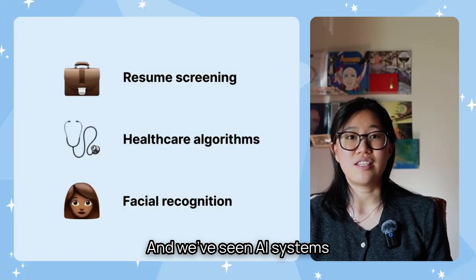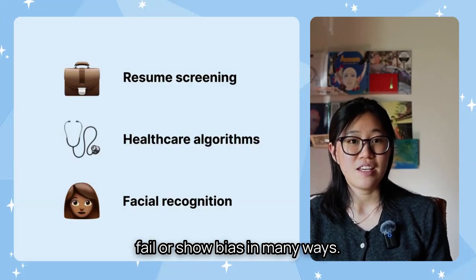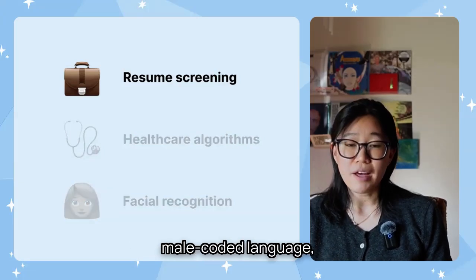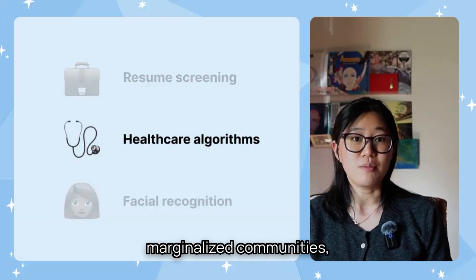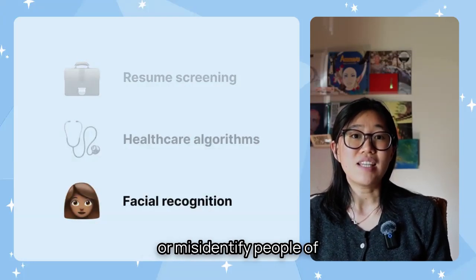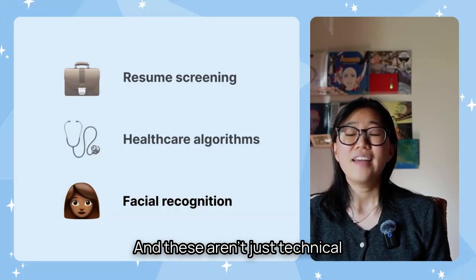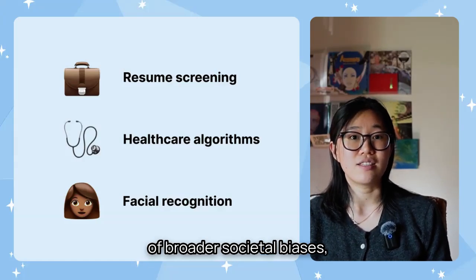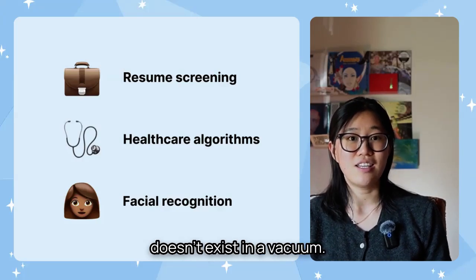We've seen AI systems fail or show bias in many ways. AI can prefer resumes with male-coded language, undervalue patients from marginalized communities, or misidentify people of color in facial recognition. And these aren't just technical glitches — they're reflections of broader societal biases. They remind us that AI doesn't exist in a vacuum.